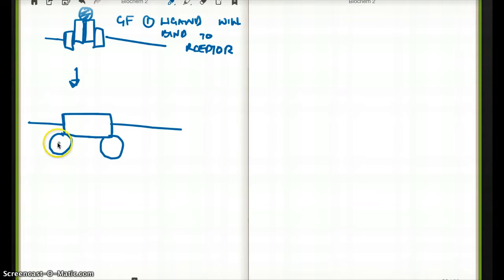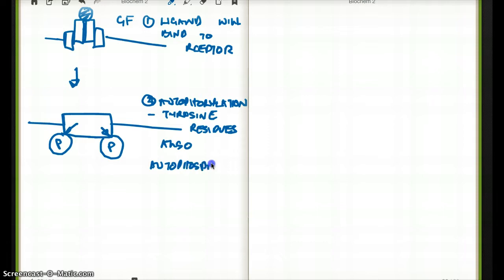This autophosphorylation doesn't happen anywhere. It happens at a specific site. And that specific site has a tyrosine. That's why they say tyrosine residues are autophosphorylated. So tyrosine residues autophosphorylates. That's the second thing that's going to happen.